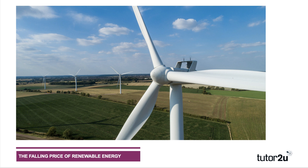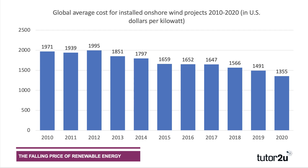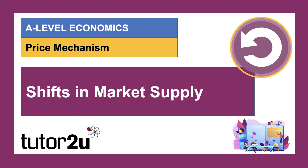Looking at the onshore wind market: in 2020 the cost of onshore wind per kilowatt was pretty low and falling, particularly compared to a decade before. This chart shows the cost per kilowatt of onshore wind energy — there has been a steep fall particularly since around 2012-2013. In 2012 it stood at nearly $2,000 per kilowatt; it is now well below $1,500 and expected to fall further as economies of scale are exploited and innovations adopted, increasing market supply and driving down price.